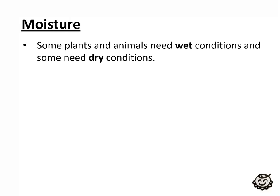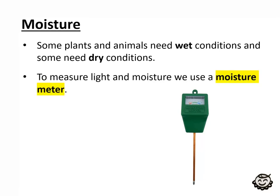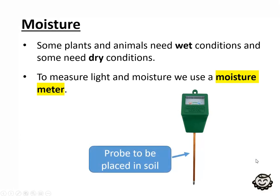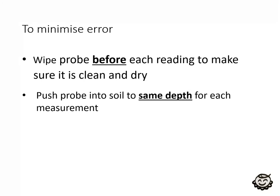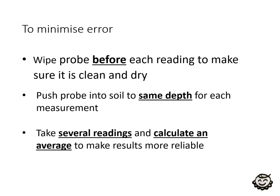Moisture: some plants and animals need wet conditions and some need dry conditions. We use a moisture meter which has a probe placed in the soil. To minimise error: wipe the probe before each reading to make sure it's clean and dry. Push the probe carefully into the soil to the same depth for each measurement — around five centimetres. As always, take several readings and calculate an average to make results more reliable.